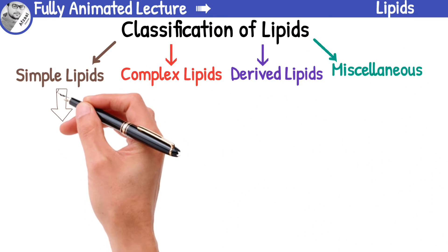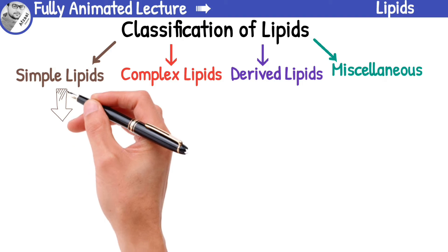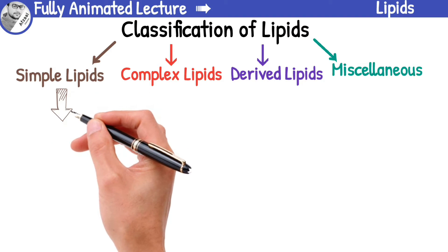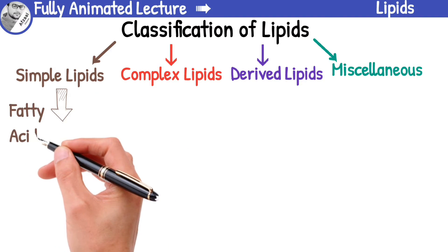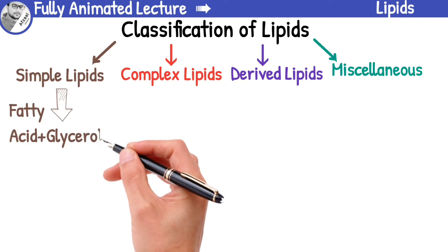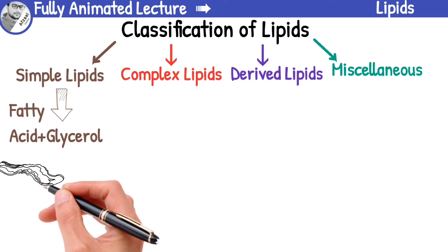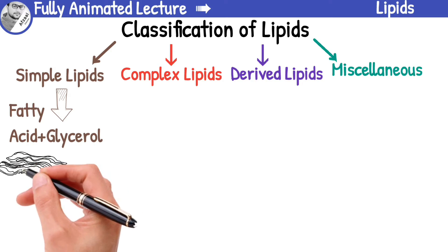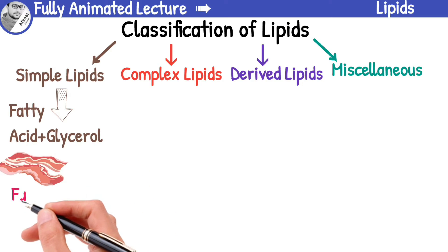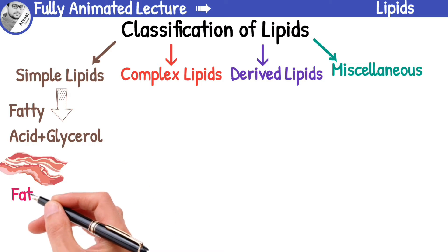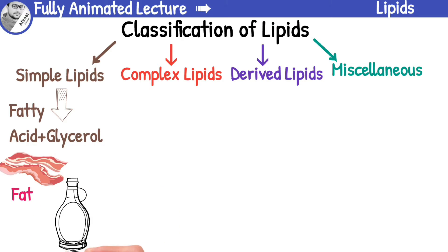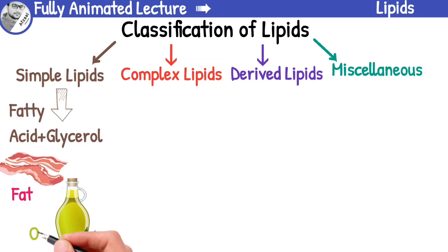Simple lipids are made up of fatty acids and glycerol. They are further classified into two types: fats and oils. Fats are solid at room temperature, while oils are liquid. Simple lipids are mainly used for energy storage in our body.